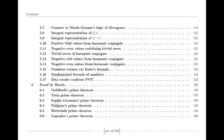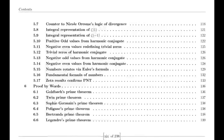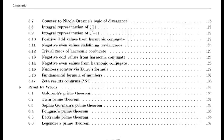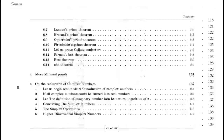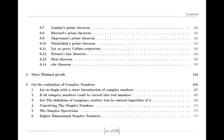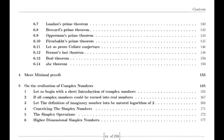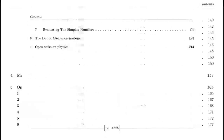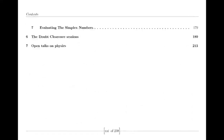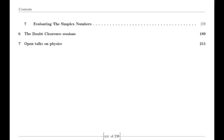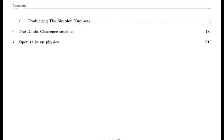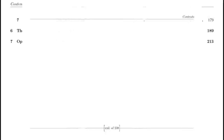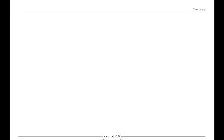Dirichlet Eta Function. Riemann was also influenced by the Dirichlet eta function, defined by an alternating series. This function is closely related to the zeta function and provides valuable insights into its behavior, particularly for values of s less than 1. The relationship between the eta function and the zeta function is encapsulated in a simple formula involving the Gamma function and powers of 2, which helps in understanding the zeta function's properties across different regions.